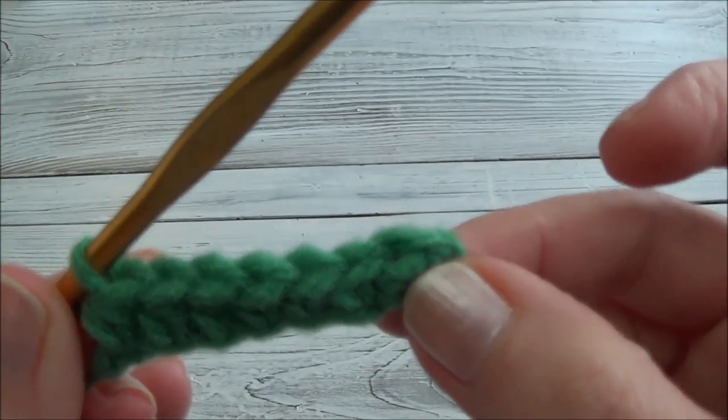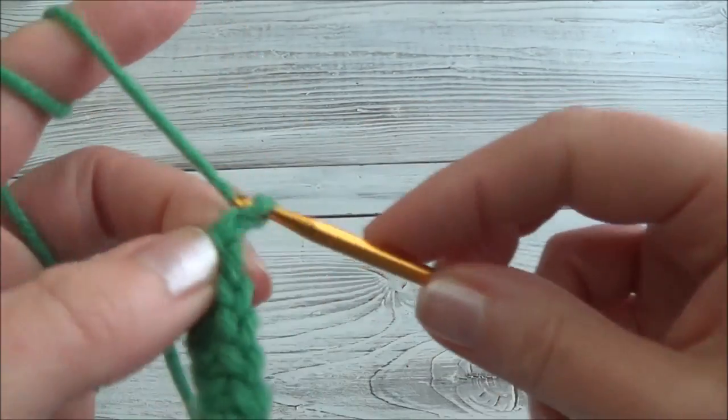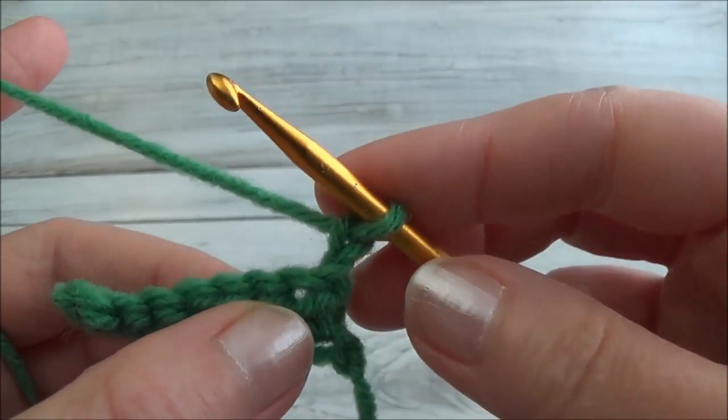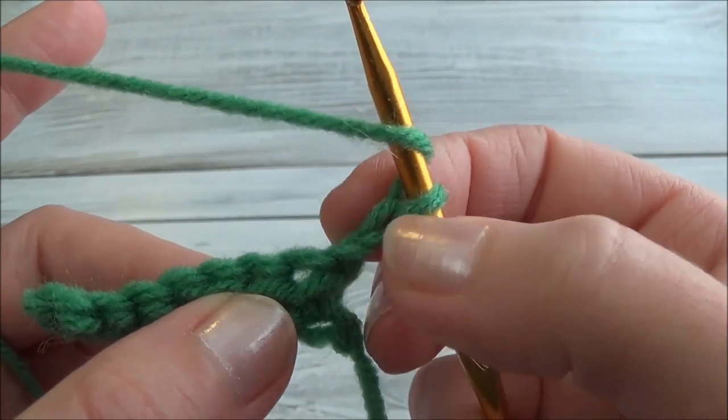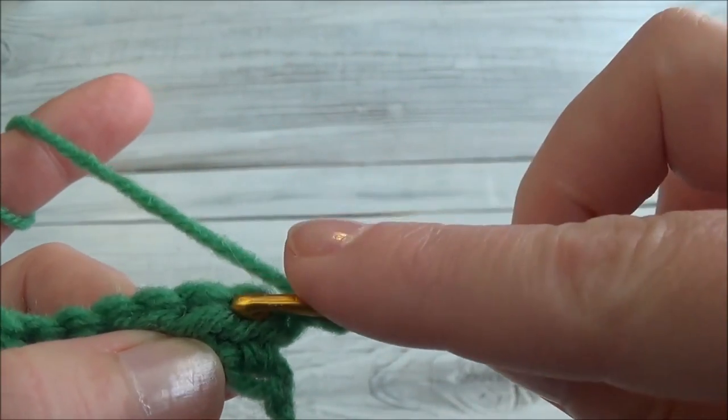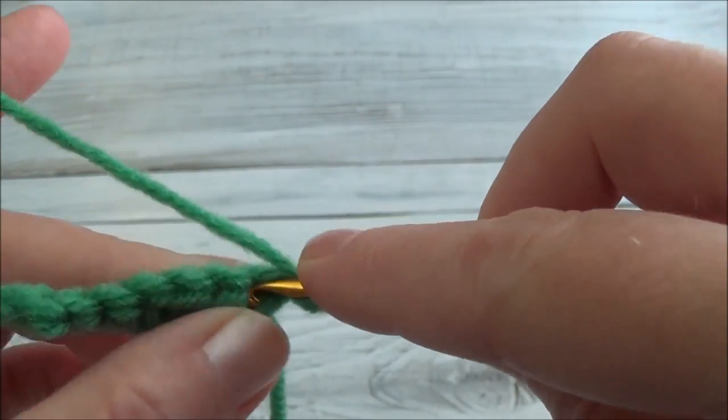So yarn over, going into the next chain, yarn over, into the next chain, and last chain of the row, yarn over and into the next chain. We're done row one and now we have seven stitches across. Chain two and turn.